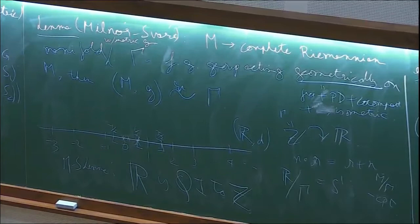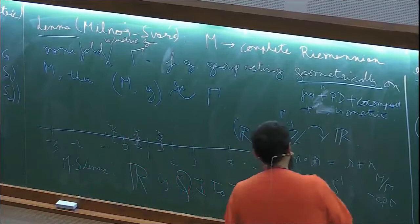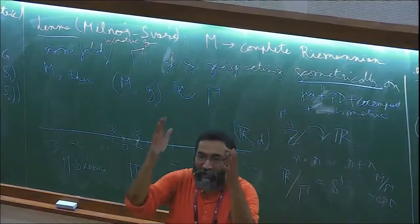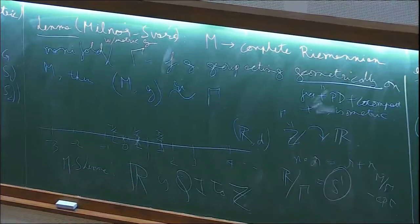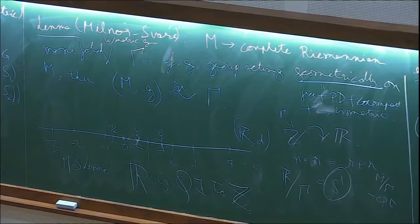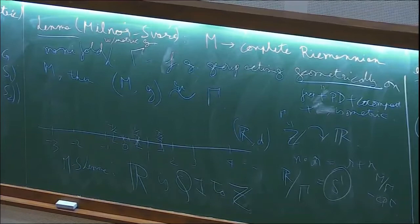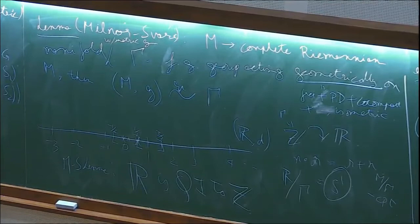What the Milnor-Schwarz Lemma says is essentially: studying the universal cover of a compact gadget, up to quasi-isometry, is the same as studying the fundamental group, up to quasi-isometry. You start with a compact manifold, choose an arbitrary metric on it, lift that metric to the universal cover, and the metric on the universal cover is quasi-isometric to the fundamental group.